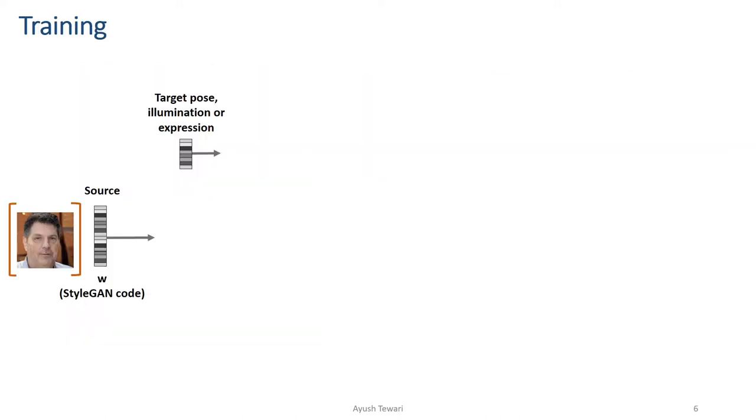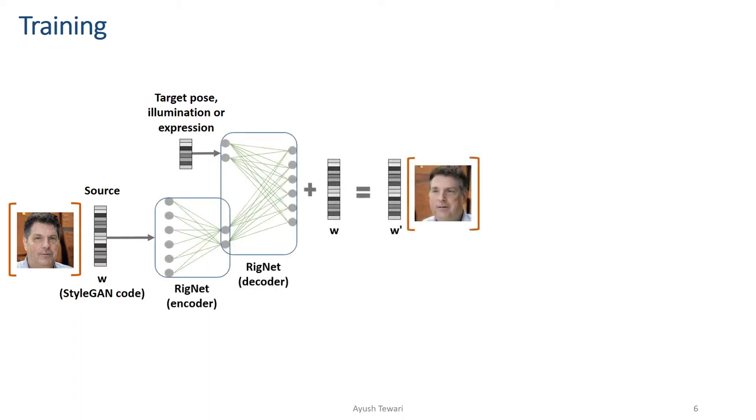Let's take a look at our method. We take as input a StyleGAN code vector which is the input to StyleGAN. In addition, the target control parameters are also provided as input. Our RigNet network computes a new code vector corresponding to the target parameter input. We train separate networks for pose, expressions, and illumination.